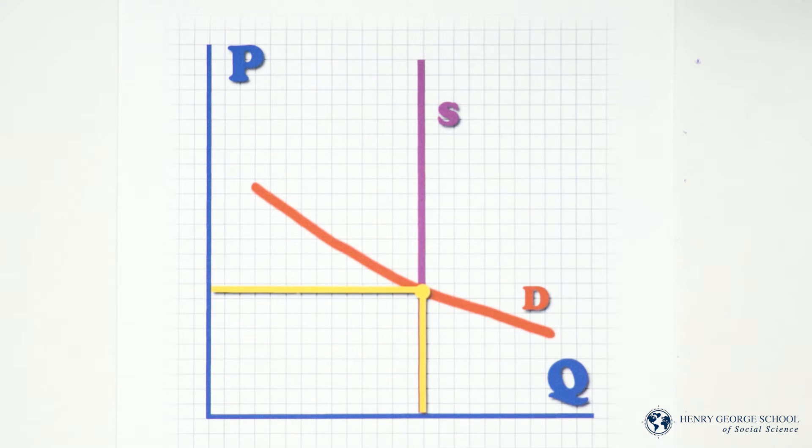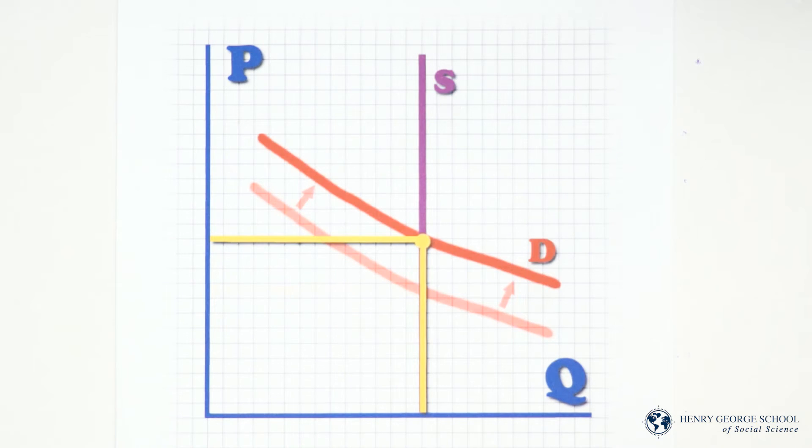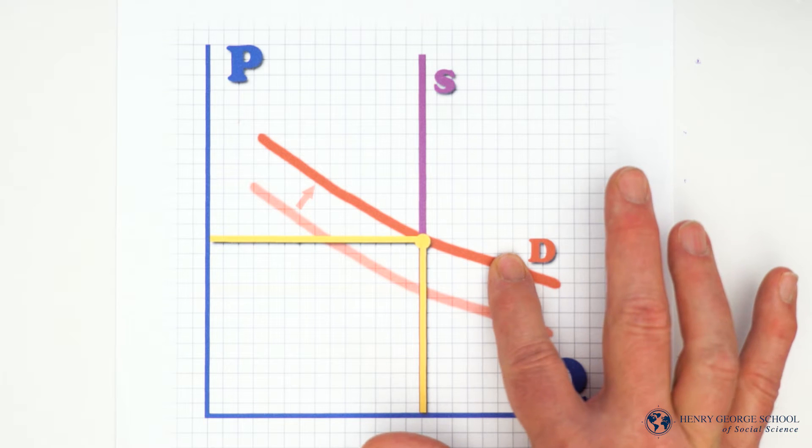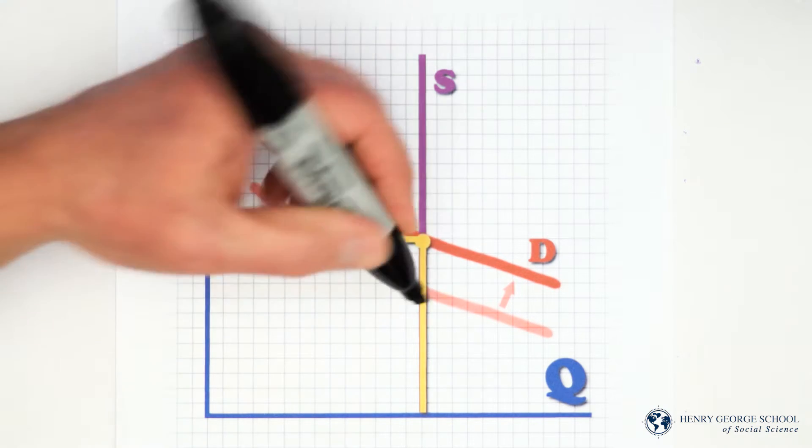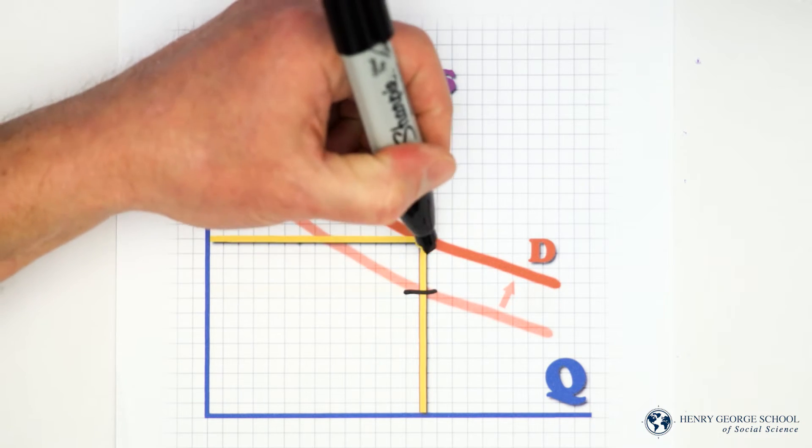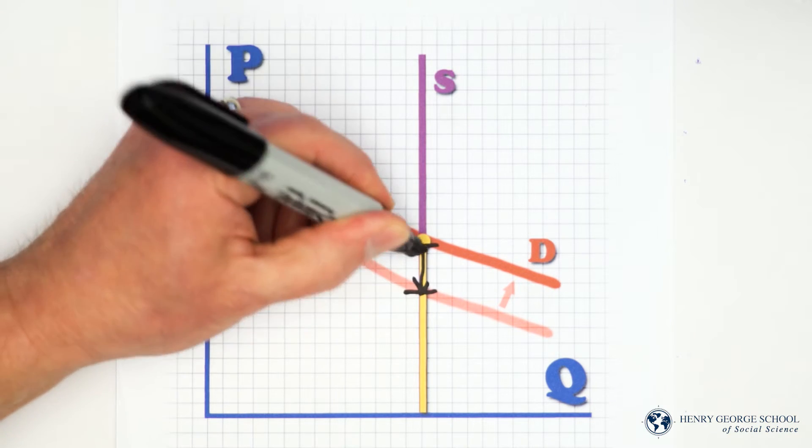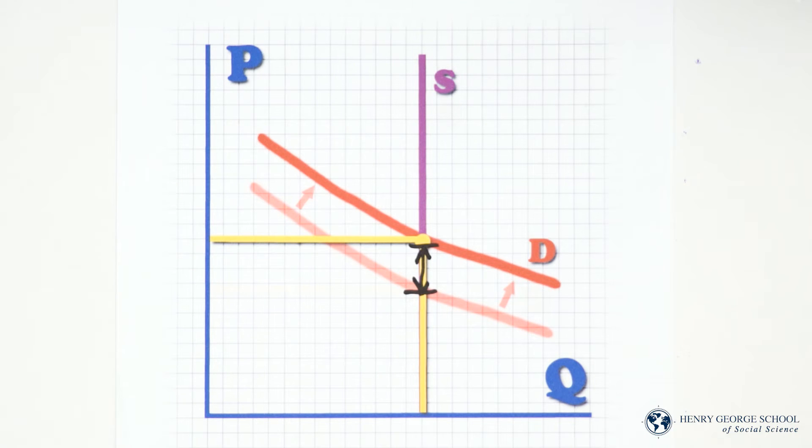If, however, something is fixed in supply, then obviously its supply curve cannot respond to changes in demand. Can we think of a factor of production that's fixed in supply? We've been talking about one all along. The supply curve for land is vertical. When there's increased demand, which we show here by the demand curve shifting up, there are no land factories to crank more land into production. So what happens is the price goes up. And that's what happens when a factor of production is fixed in supply.